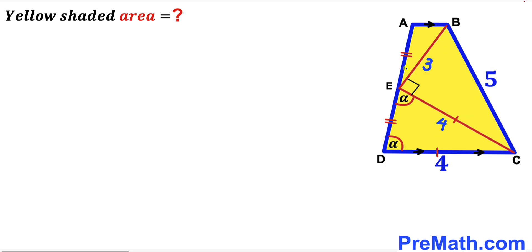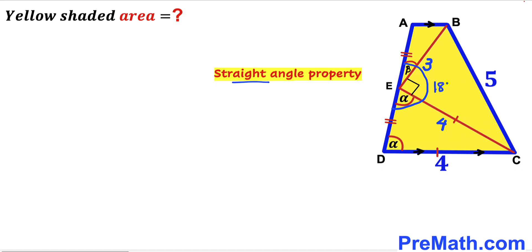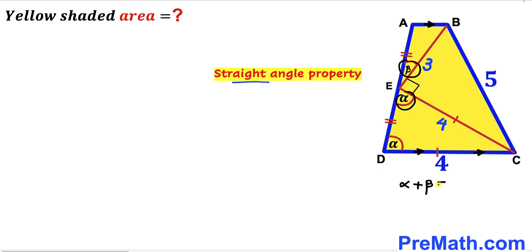In the next step, I'm going to label angle AEB as angle beta and recall the straight angle property. This whole angle must be 180 degrees, and we know this angle is 90 degrees. Therefore, the sum of angles alpha and beta — in other words, angle alpha plus angle beta — must equal 90 degrees.